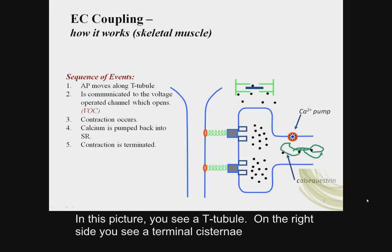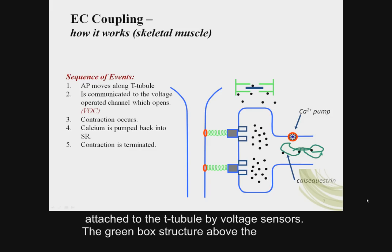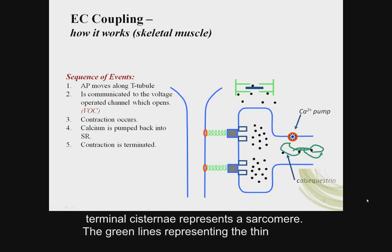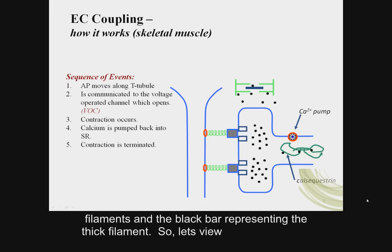In this picture, you see a T-tubule. On the right side, you see a terminal cisternae attached to the T-tubule by voltage sensors. The green box structure above the terminal cisternae represents a sarcomere, with green lines representing the thin filaments and the black bar representing the thick filament. Let's view excitation-contraction coupling.